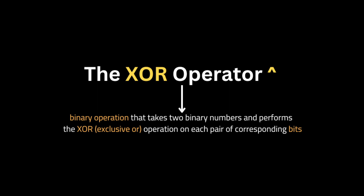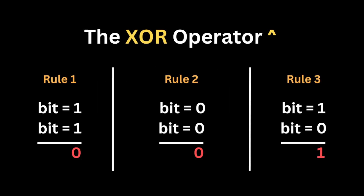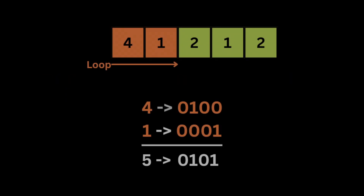The XOR operator is a bitwise binary operation that takes two binary numbers and performs the exclusive OR on each pair of corresponding bits, producing a new binary number. The rules are: if both bits are 1, the result is 0; if both bits are 0, the result is 0; and if one bit is 0 and the other is 1, the result is 1.